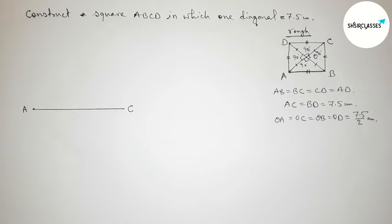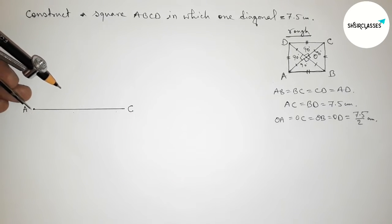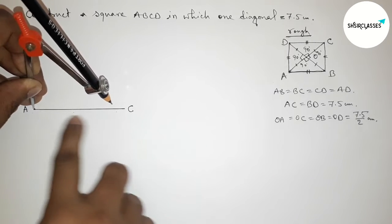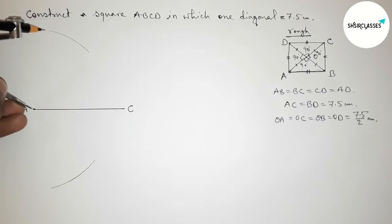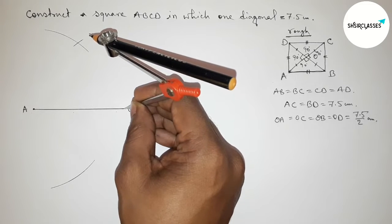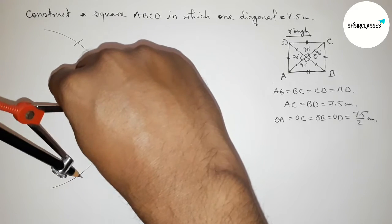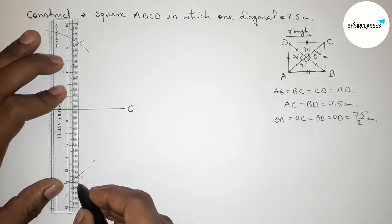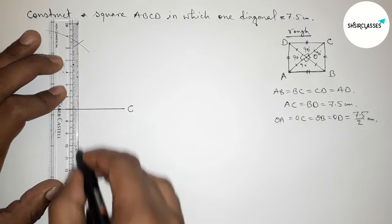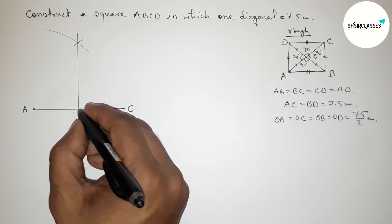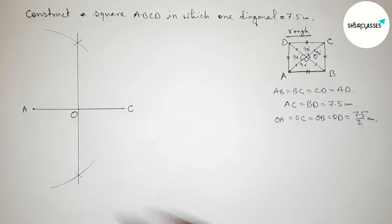Now we bisect line AC. Putting the compass on point A and taking a radius greater than half of AC, draw an arc above and below the line. Then placing the compass on point C with the same length, cut the arcs above and below. Joining these intersection points gives the perpendicular bisector of AC.